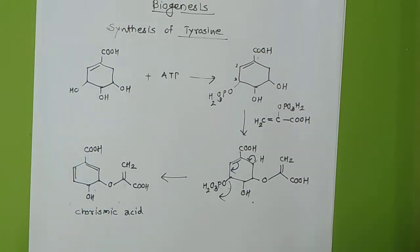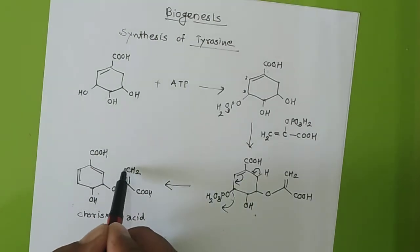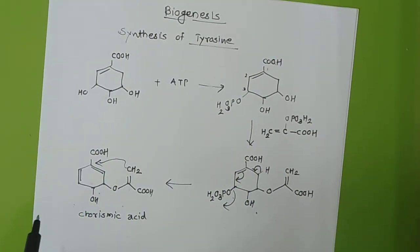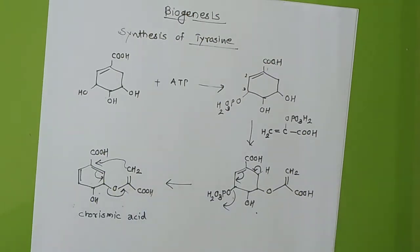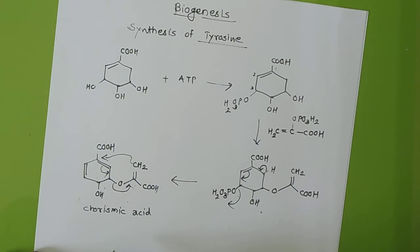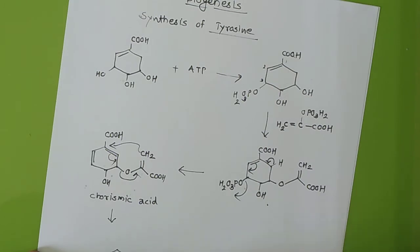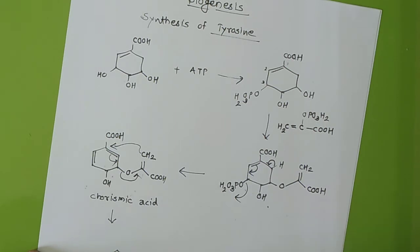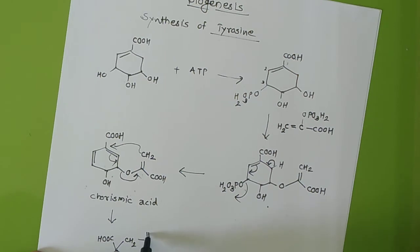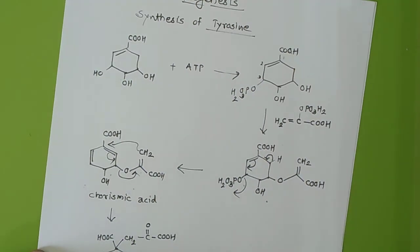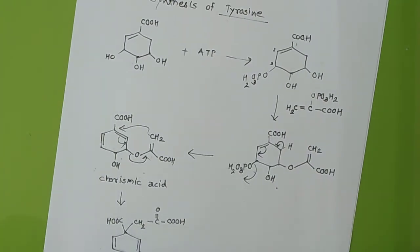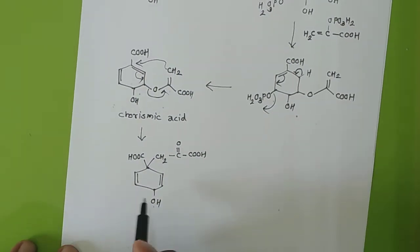Now from chorismic acid we have to prepare prephenic acid. This bond will shift here. I will write down prephenic acid: this double bond, this OH, this COOH, and on the same carbon there will be an attachment of CH2, then C=O, and COOH. This double bond will come here. The name of this compound is prephenic acid.